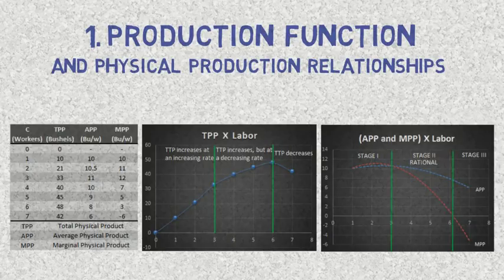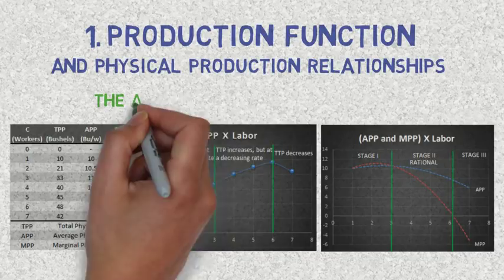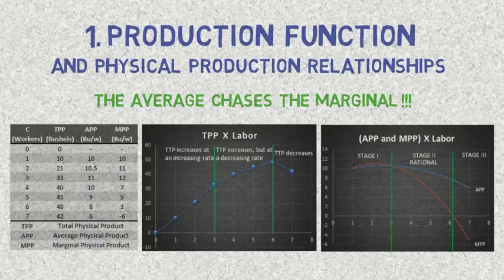This fact is quite easy to understand. Suppose, for instance, that you are a student and your average is 80 after passing two tests. If you score 100 on the next test, your average will move up to 86.7, which is higher than 80, simply because the third grade was higher than the average. In other words, the average will always follow the marginal.